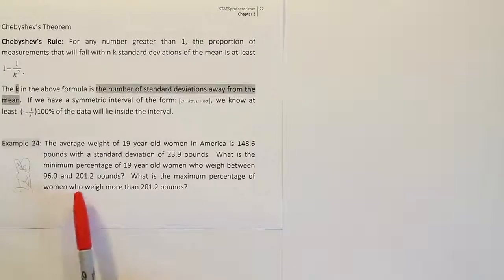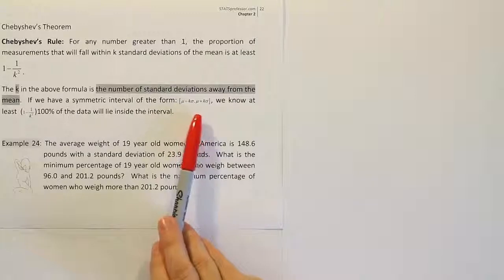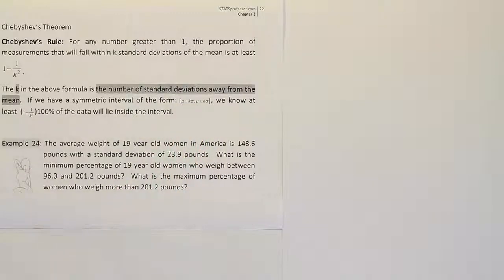And I see that they gave us two numbers here, and so those two numbers are probably an interval of the form that's given here. What we have to do is to check to see if that's in fact correct.